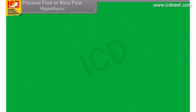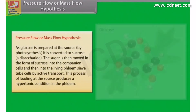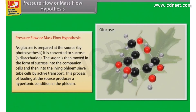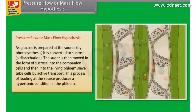Pressure flow or mass flow hypothesis is the accepted mechanism used for the translocation of sugars from source to sink. Glucose is prepared at the source by photosynthesis and is converted to sucrose. The sugar is then moved in the form of sucrose into the companion cells and then into the living phloem sieve tube cells by active transport.